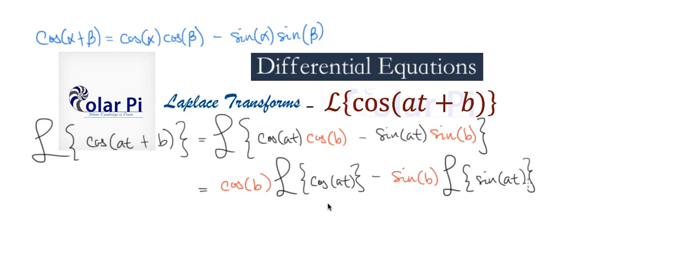Now, I have videos dedicated to showing you how to do the Laplace transform of cosine at and sine at, so I'm not going to show you that here. Laplace transform of cosine at is S divided by S squared plus a squared. And for sine at, it's a divided by S squared plus a squared.